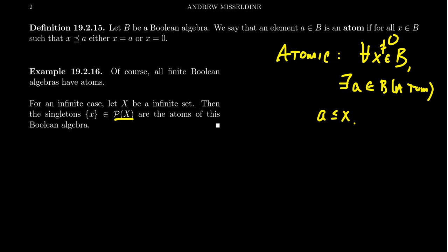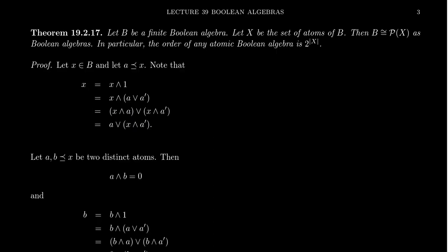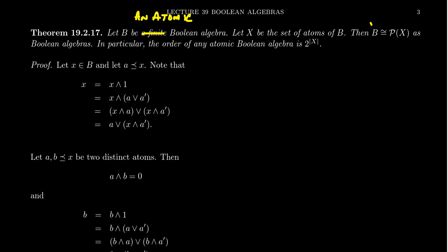What I want to do is prove and classify what an atomic Boolean algebra looks like. This theorem will be stated in terms of finite Boolean algebras, though honestly I could erase the word 'finite' and just say 'an atomic Boolean algebra,' then let X be the set of atoms. We will argue that B is isomorphic to the power set of X as a Boolean algebra. In particular, the order of any atomic Boolean algebra is necessarily 2 raised to the cardinality of X, since that's the cardinality of the power set.